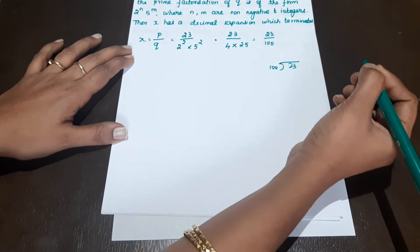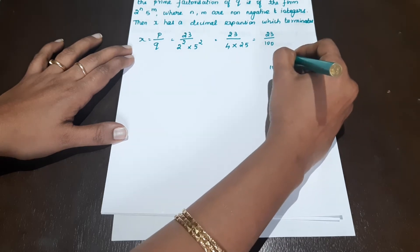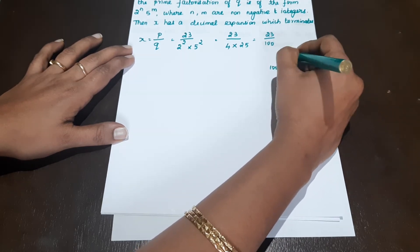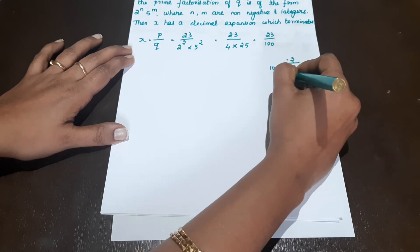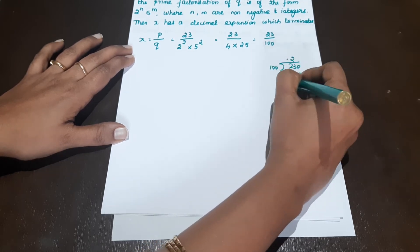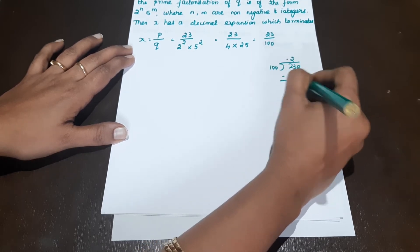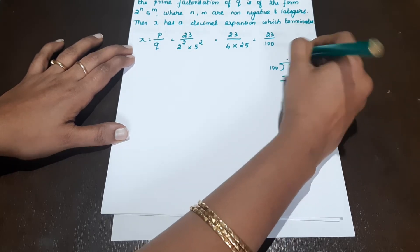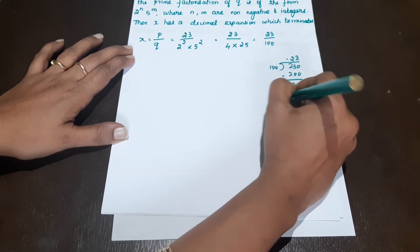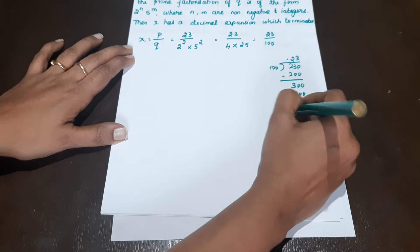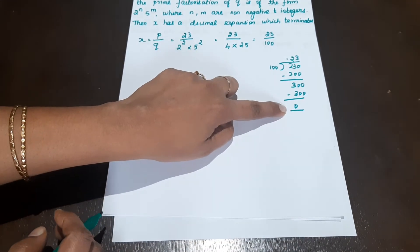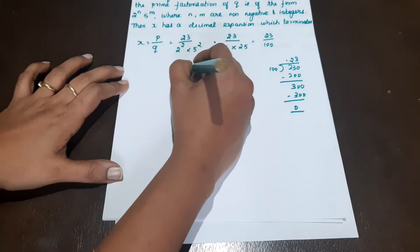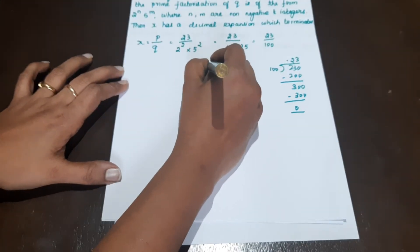Let's divide. So 23 ÷ 100 — since 100 doesn't go into 23, we put 0 point. 2 times: 200, balance 30. 300 ÷ 100 = 3, balance 0. So the remainder is 0, and the decimal expansion terminates here.